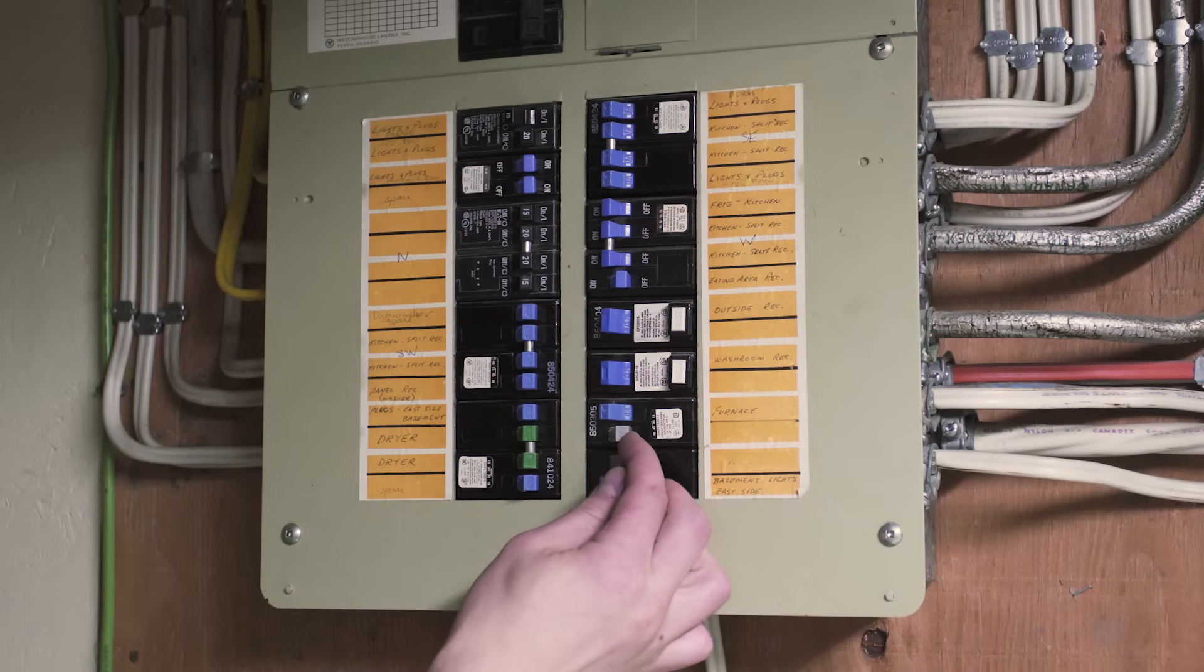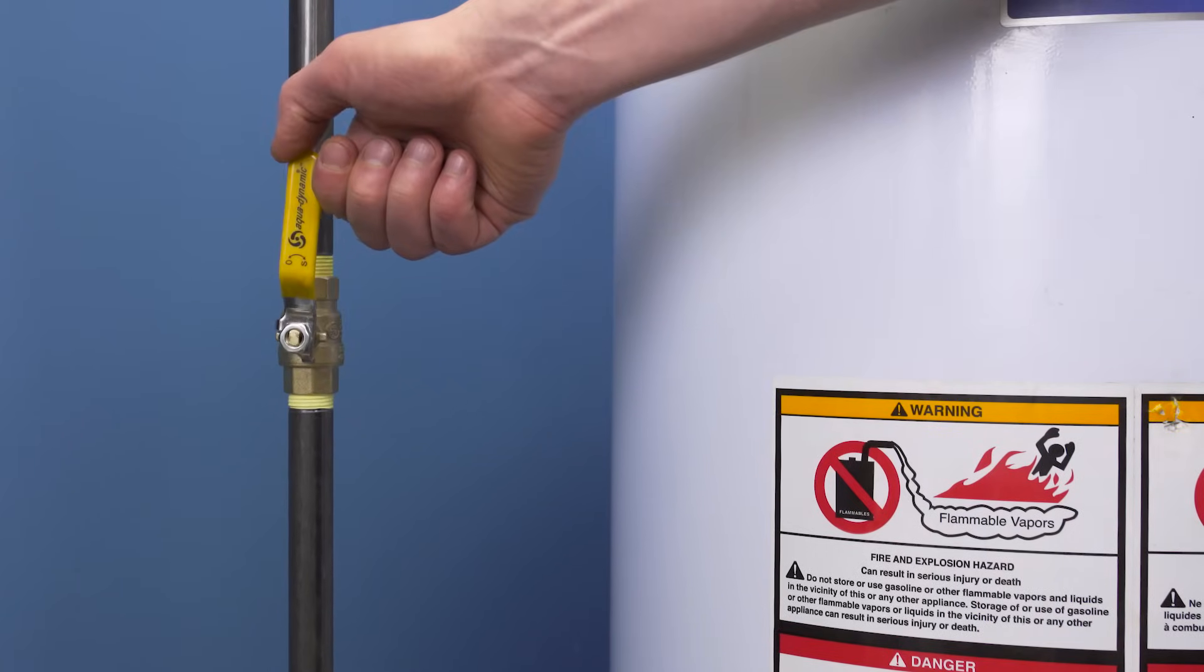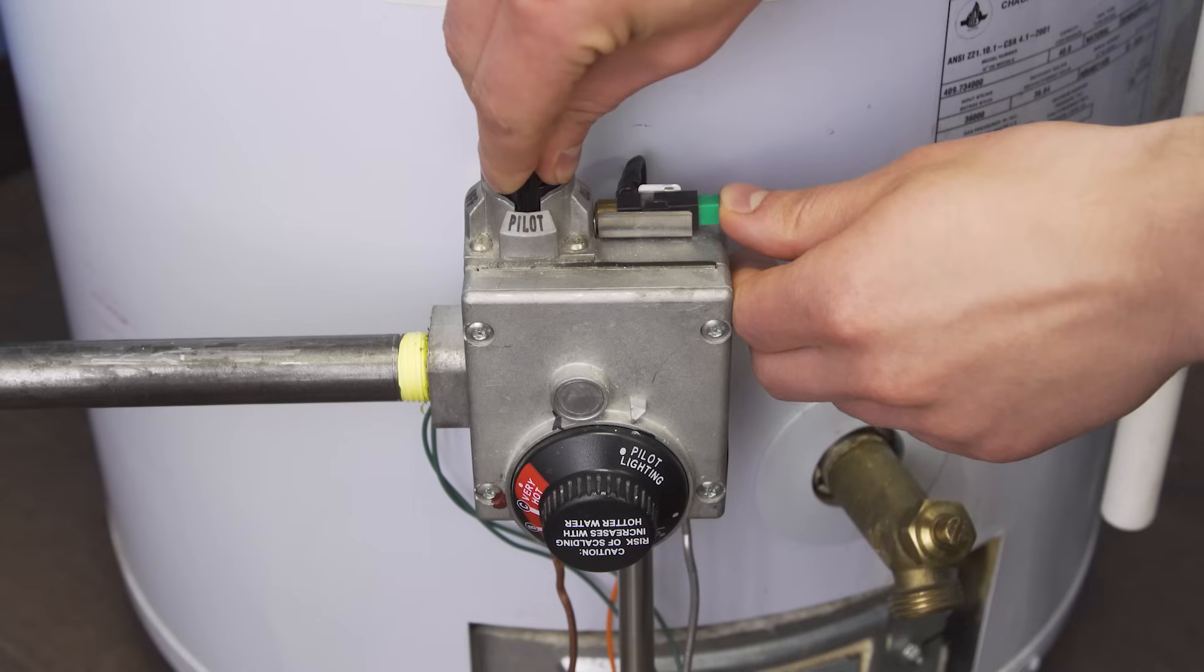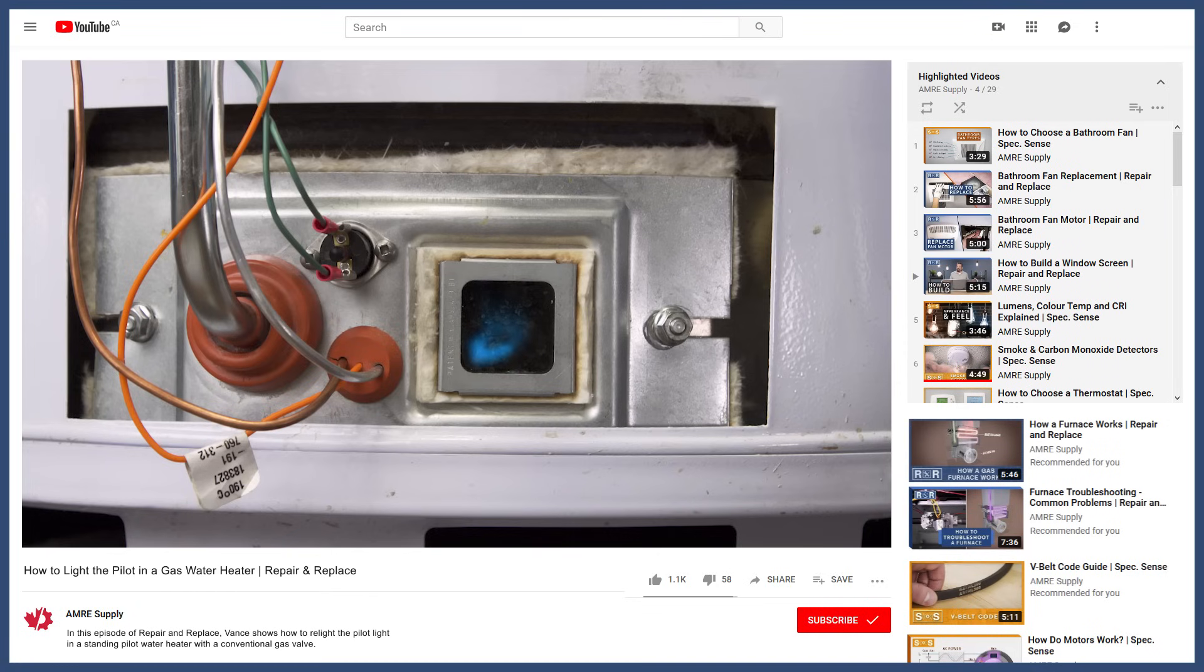If you have an electric water heater, turn on the power at the breaker. For gas water heaters, turn on the gas and relight the pilot. To see how to relight the pilot, watch the video linked below.